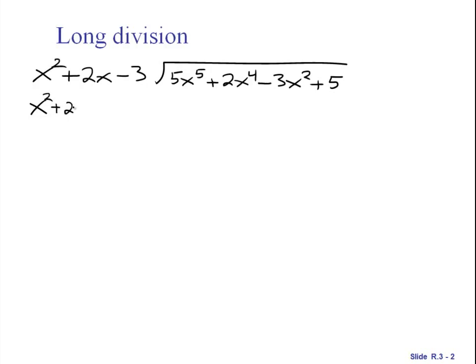You have to change this to 5x to the 5th plus 2x to the 4th plus 0x cubed minus 3x squared plus 0x plus 5. Now we have all of our powers. Long division is really just like doing normal division with numbers. You take this piece and divide it into this piece and start with the largest one you can. So x squared can go into x to the 5th. How many times? It is going to be 5x cubed.